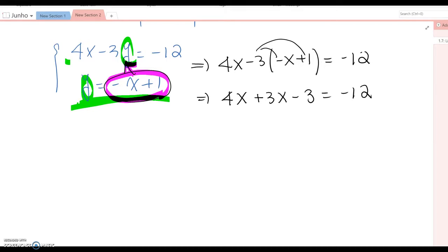Now let's combine like terms. As you see, 4x plus 3x are like terms, so they become total 7x minus 3 equal to negative 12. Then combine the 3, so 7x equal to negative 9. Divide by 7, so we got x equal to negative 9 over 7.